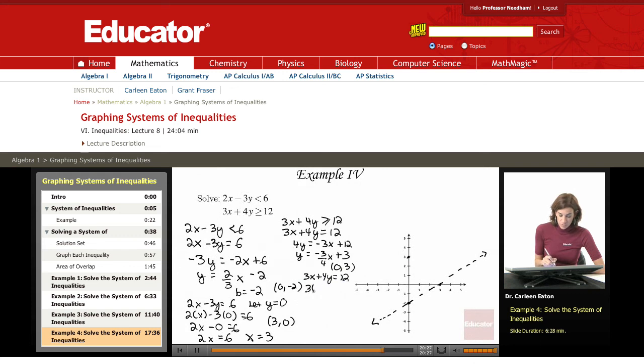Let y equals 0. Which gives me 3x equals 12 or x equals 4. So my x-intercept is 4, 0. Right here.